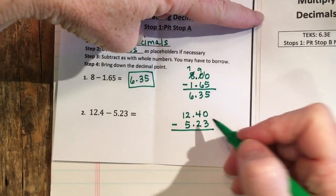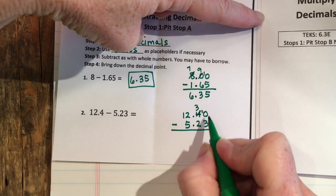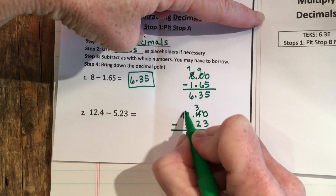Here I need a 0 above the 3 so that I can subtract. And then again I'm going to be borrowing, so this becomes a 3 and this is a 1. 10 minus 3 is 7, 3 minus 2 is 1. Again I'm borrowing, 12 minus 5 is 7, and I'm going to drop down my decimal. So 7.17.